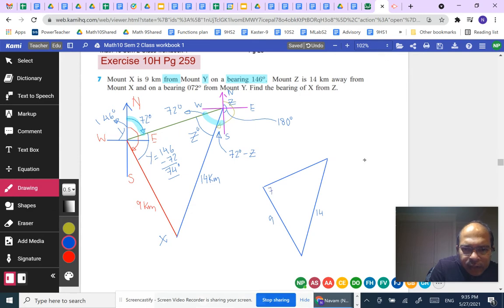So let me write that as 14, 9, 74 degrees, and let's label these as Y, X, Z. Remember that we're trying to find angle Z.